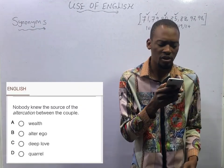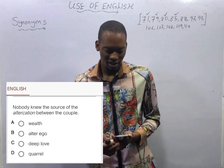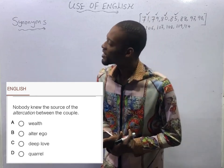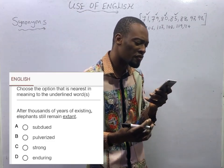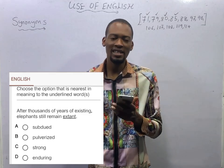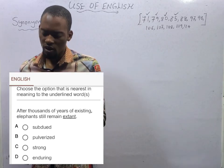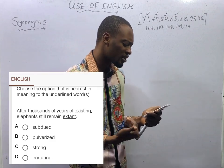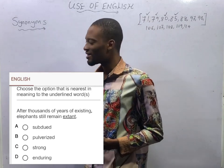'Nobody knew the source of the altercation between the couple.' Altercation does not mean wealth, does not mean alter ego, and does not mean deep love. Altercation means quarrel. Next: 'After thousands of years of existence, elephants still remain extant.' Still remaining extant means they are still surviving, abiding, enduring, and existing. Extant doesn't mean extinct — extinct means they are phasing out. Extant means they are still enduring, surviving, and existing. Option D is correct.